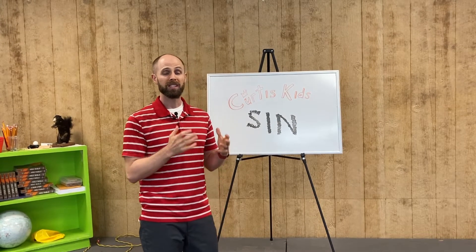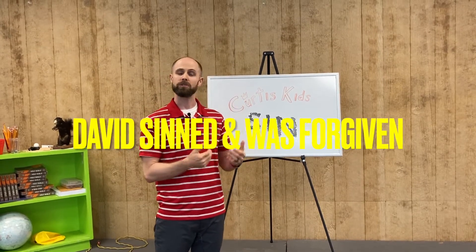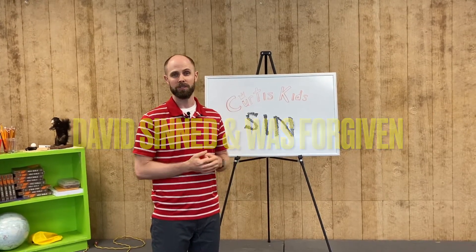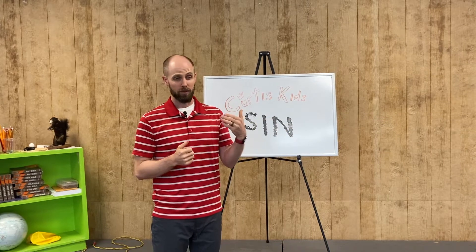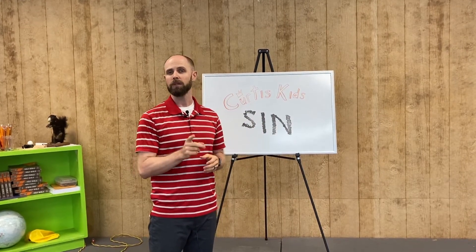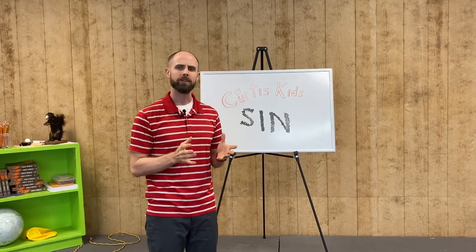See, David took another man's wife and treated her like it was his own wife. And then to cover that up, he had the guy killed. So he went from something bad to something even worse. And God came and confronted him through his prophet Nathan.